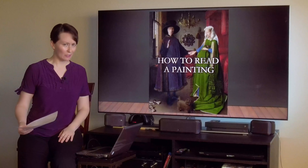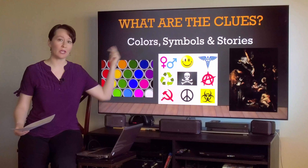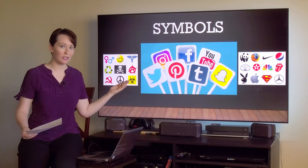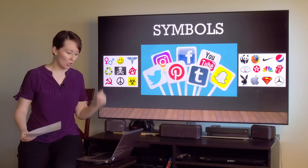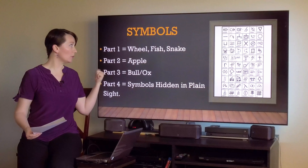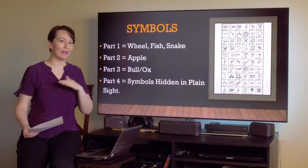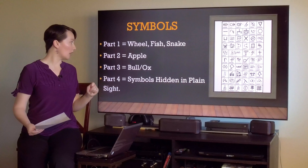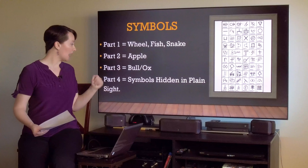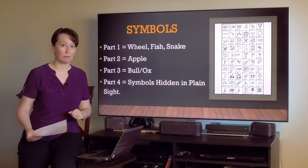What do we need to read a painting? We need the clues, right? And we've got those clues in colors, symbols, and repeated stories. I'm so happy to introduce you to our next set of videos where we will be discussing symbols in art. Part one will be wheel, fish, and snake — three specific symbols. Then part two will be all about the apple in art. Then we'll cover the bull and ox, or bovine creatures in general. And our last video will discuss symbols hidden in plain sight.